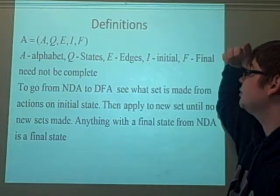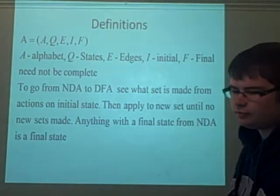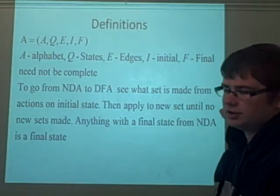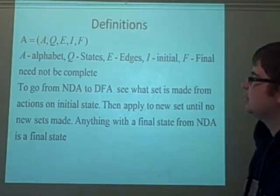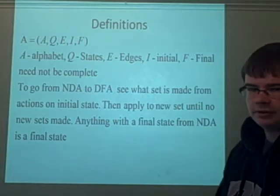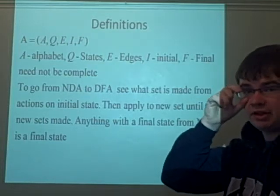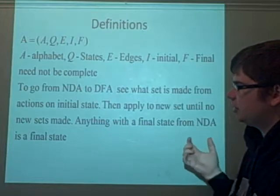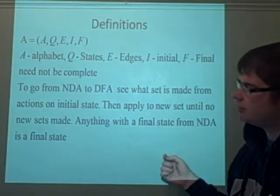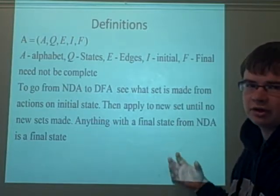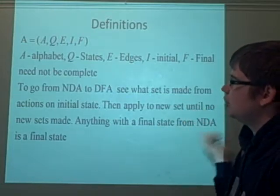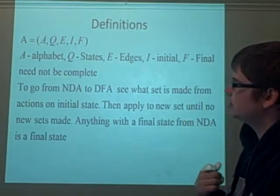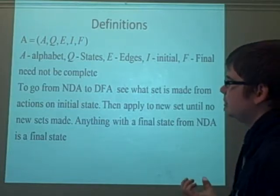The main thing we're changing is just the symbol for E, because the edges, like before we had delta, there can be as many edges as you want in an NDA and it doesn't have to be complete. So you can have three or four different lines, if you've only got A and B in your alphabet, you can have three or four different A's and B's going into each state and maybe just one coming out. That's perfectly acceptable in an NDA because it doesn't have to be complete.